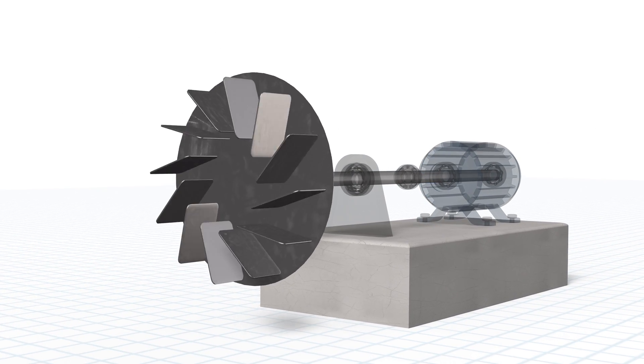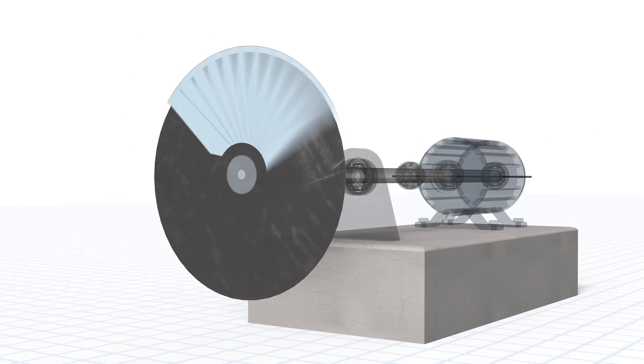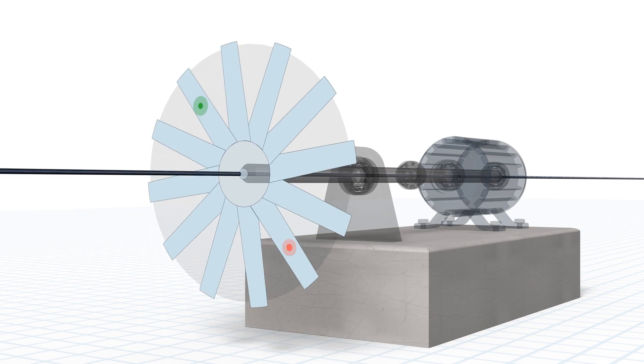Rotational unbalance occurs when there is an uneven distribution of mass around an axis of rotation.